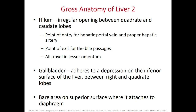The liver is the largest gland in the body, weighing around six pounds, located in the right upper quadrant. It is subdivided into two major lobes — right (much larger) and left — visible from an anterior view, and two minor lobes — quadrate and caudate — visible only from an inferior view. The hilum on the inferior surface is the portal of entry for blood vessels including the hepatic artery proper and the hepatic portal vein.